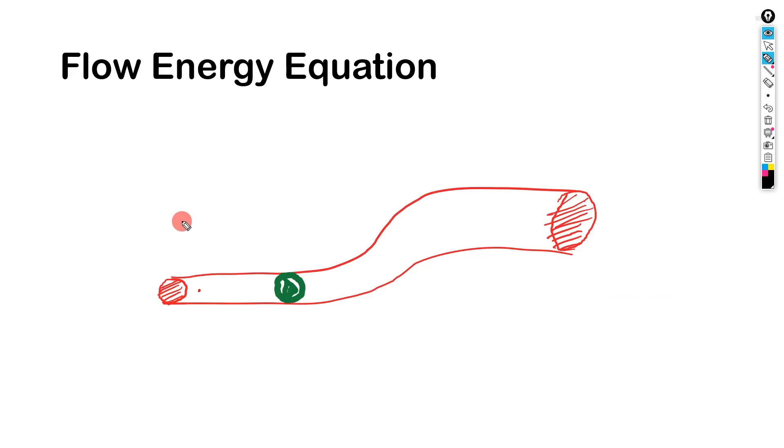I will explain the flow energy equation. Think this point, energy is E1. And this point E2. This is the fan. The fan adds energy.